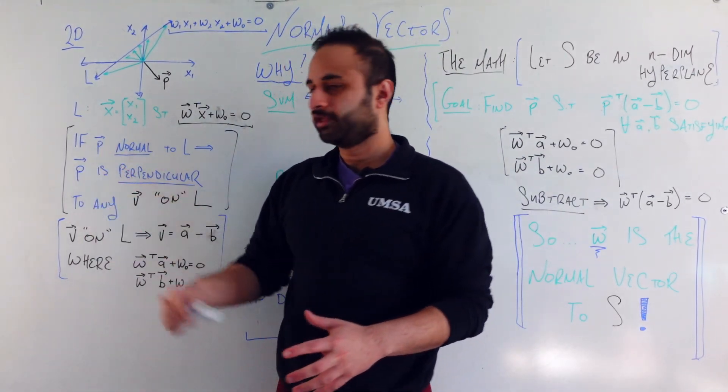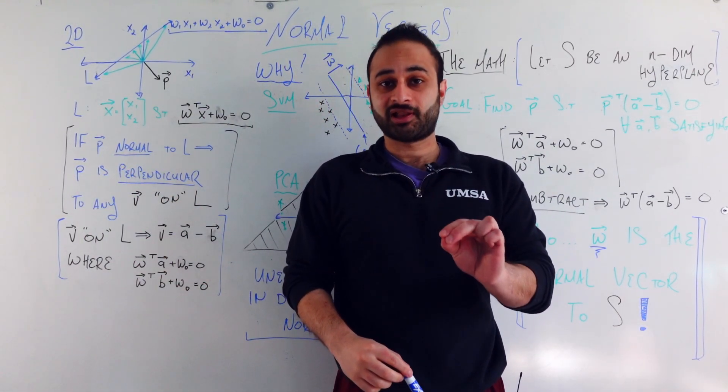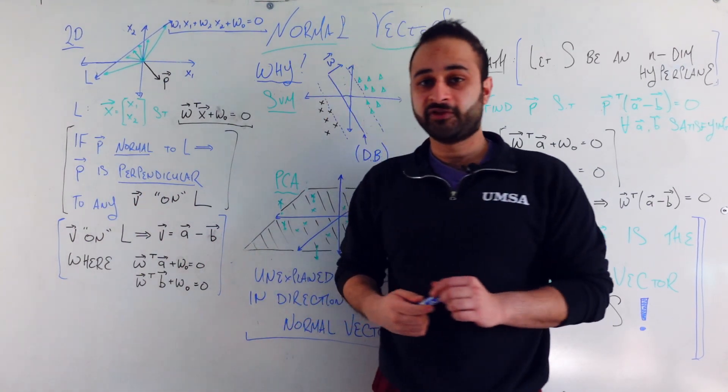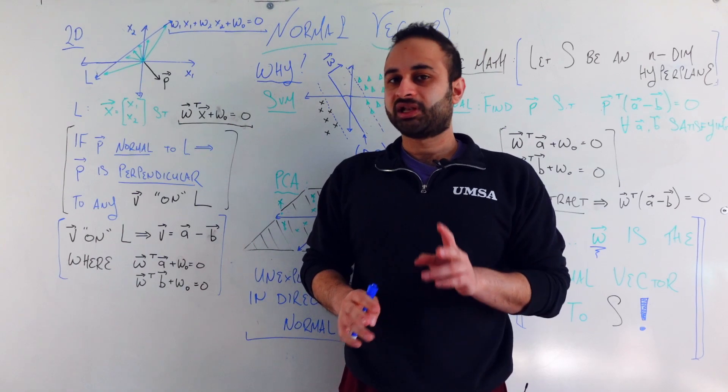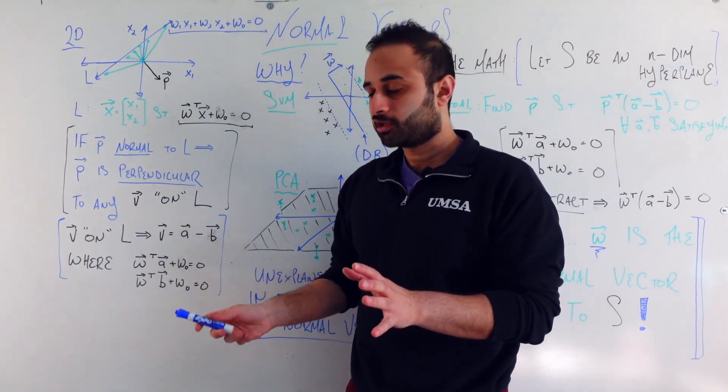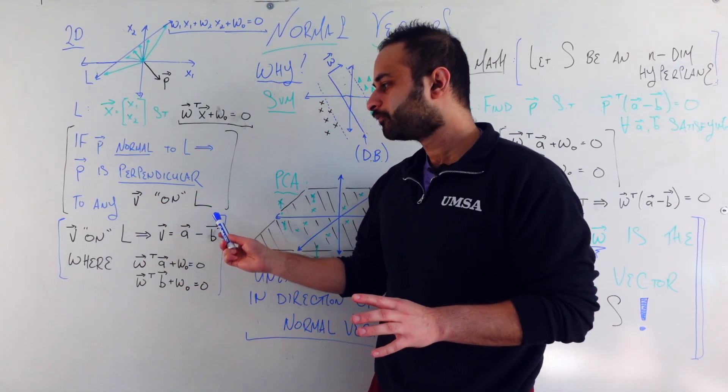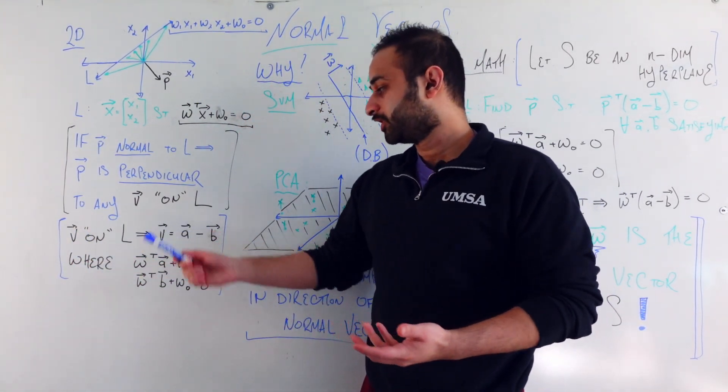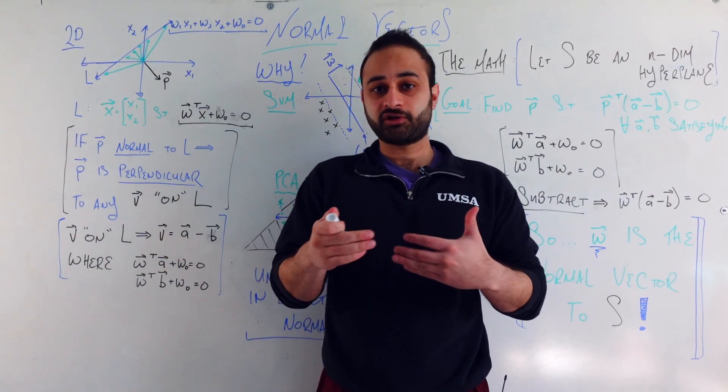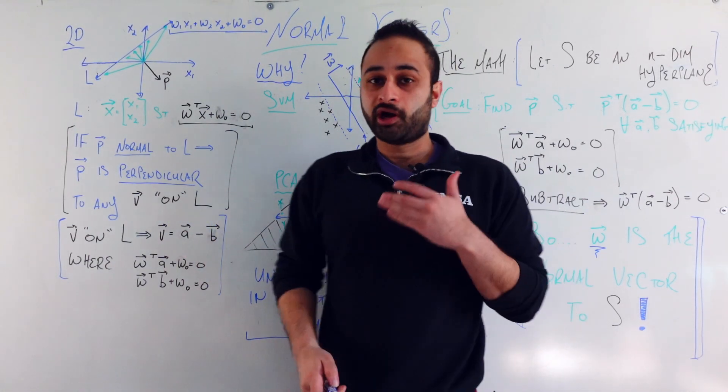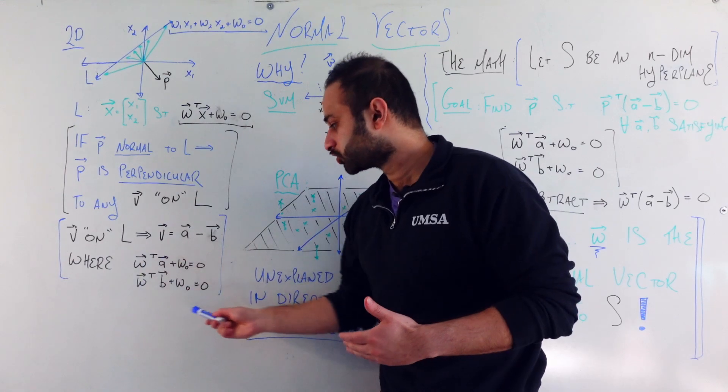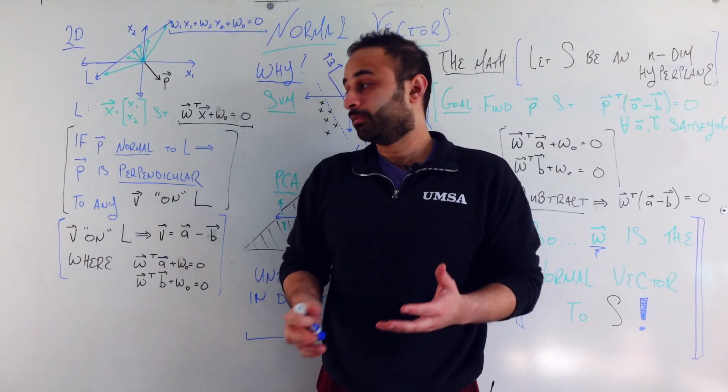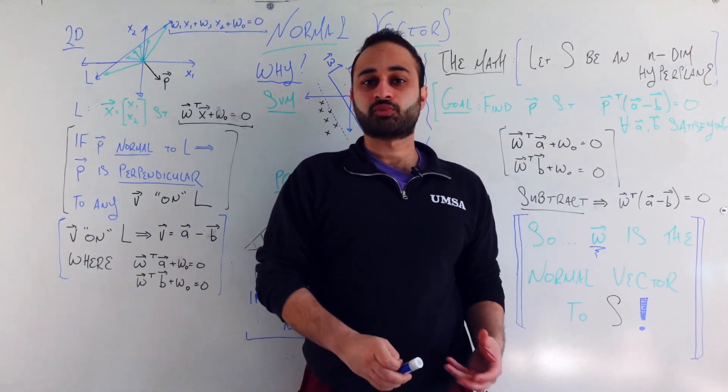So if we can find some vector p who is normal to the line, then p is perpendicular to any vector v who is on the line L. Now let me unpack this definition first of what does it mean to be on L. So vector v is on the line L, if v can be expressed as the difference of two vectors, a and b, where a and b satisfy this equation, or this equation up here. Now I don't think that's helped a lot of people so far, I've just pretty much read what's on the board, so let me unpack this more intuitively.